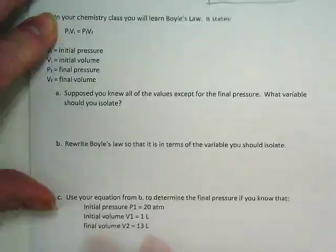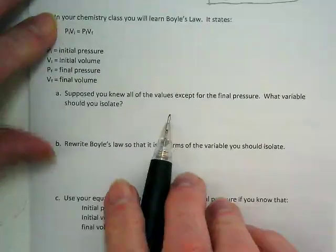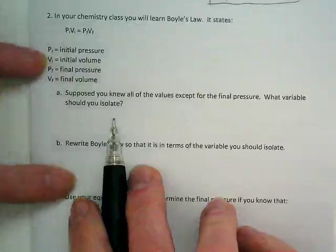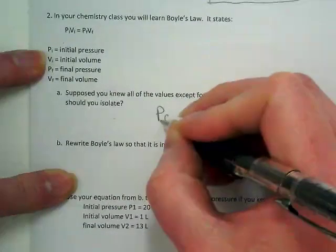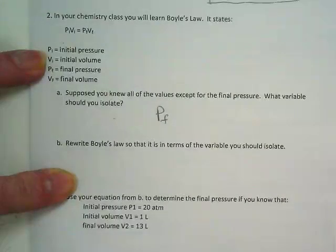Suppose we knew all the values except for the final pressure, what variable should we isolate? Well, we should isolate the P sub F because that's the final.